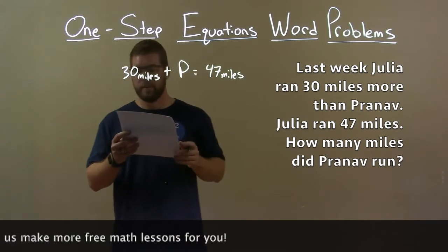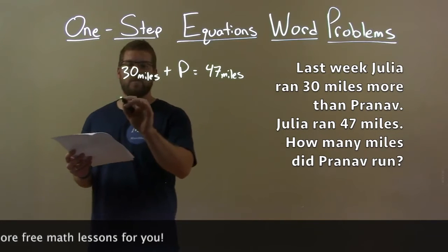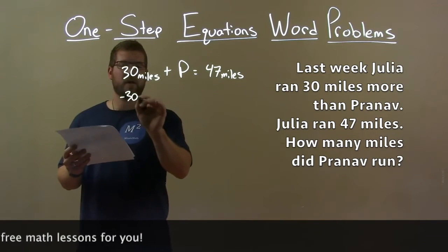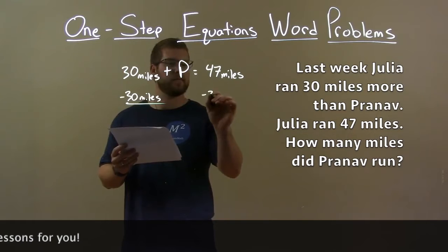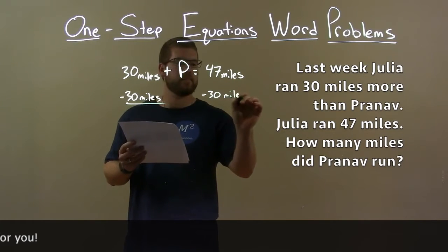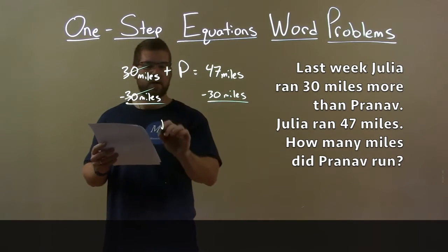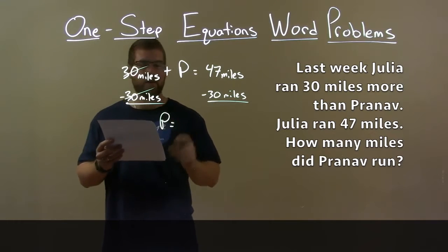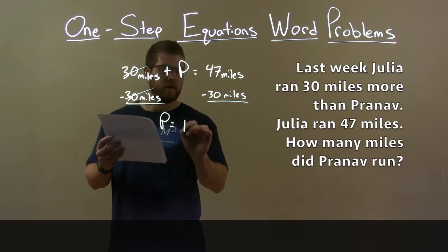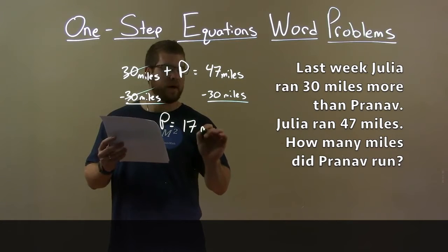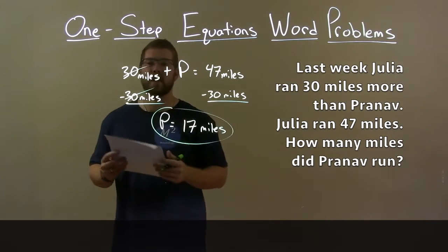Now we want to solve for P. The opposite of addition is subtraction, so subtract 30 miles from both sides. The 30s cancel, leaving P — the number of miles Pranov ran. 47 minus 30 is 17, so 17 miles is our final answer.